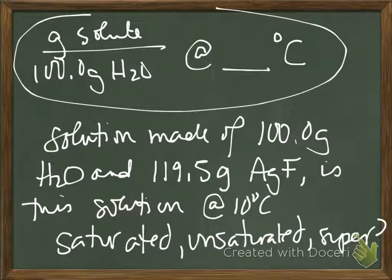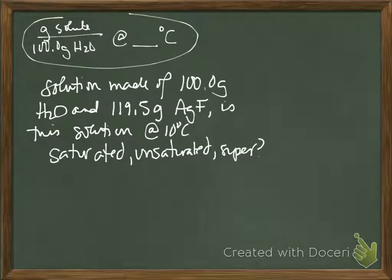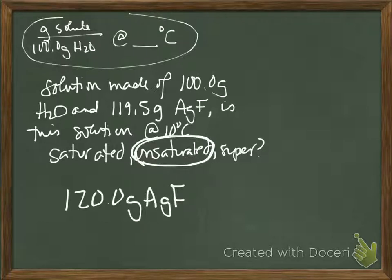You'll need to use your table. What's your first step? How about finding a solubility value for silver fluoride? It's unsaturated. How do we know that? We looked down the column for 10 degrees and looked at silver fluoride. How much solute could actually be dissolved at 10 degrees in 100 grams of water? Yeah, 120 grams of silver fluoride. So this isn't saturated. It's pretty close, but we could probably get a few more grains to dissolve. So it is an unsaturated solution.